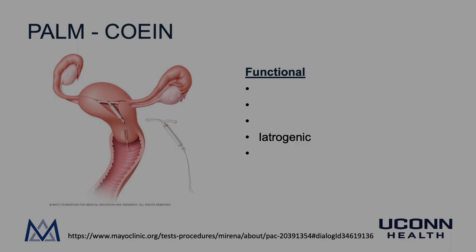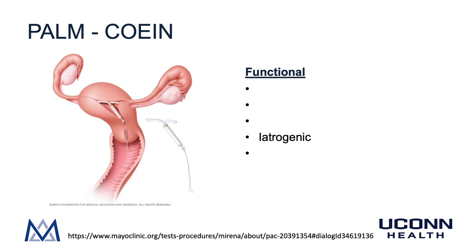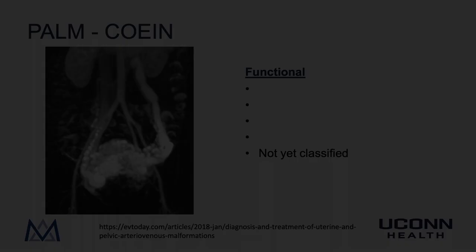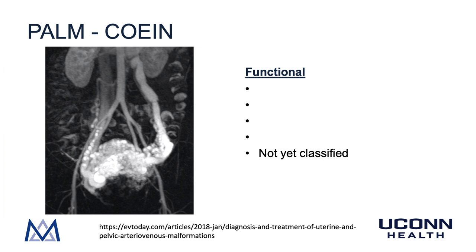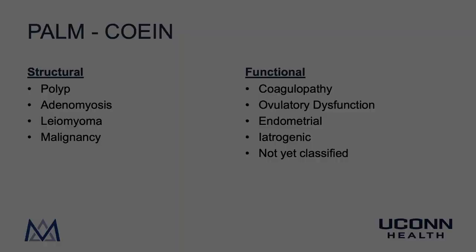The I in COIN stands for iatrogenic — different medications that patients take that can lead to abnormal uterine bleeding. As gynecologists, we see this a lot with progestin-only contraception such as IUDs, implants, Depo-Provera, and progesterone-only birth control pills. Other medications that fall here include anticoagulants such as heparin or coumadin. Finally, there is the category of not yet classified, which includes things like AV malformations of the uterus. Functional causes are usually worked up with a history, physical exam, serum laboratory values, and sometimes additional radiologic imaging.